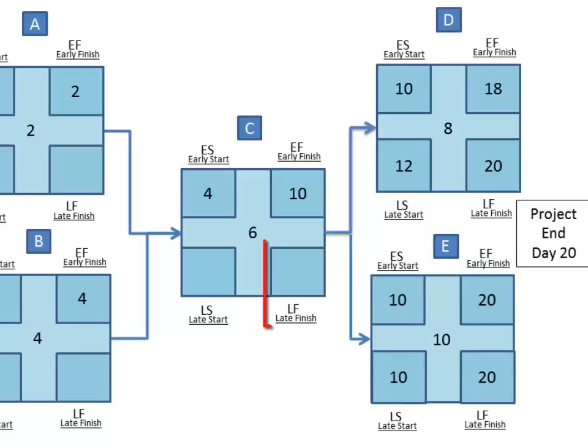Now we need to determine the late finish for task C. Since we have multiple successors D and E for the predecessor C, we'll need to make a choice. For this situation, simply choose the lower of the multiple late starts, which in this case is of course ten.